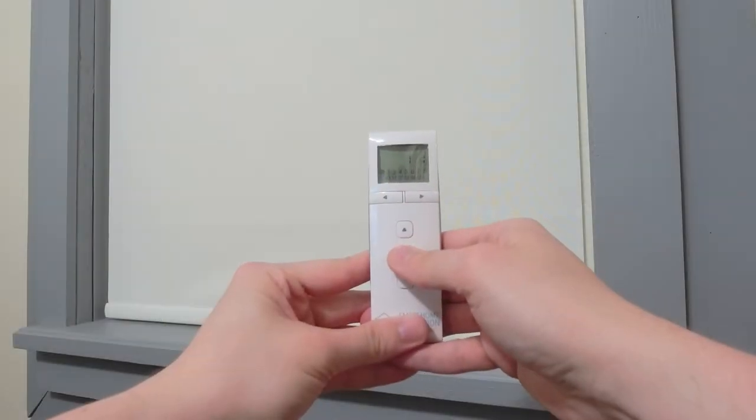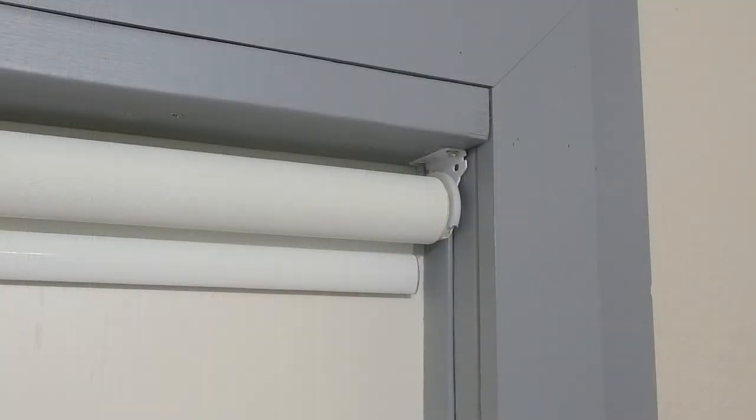In the next 10 seconds, press and hold the stop button on your remote until the shade jogs twice and beeps three times. This confirms that the remote has been paired.